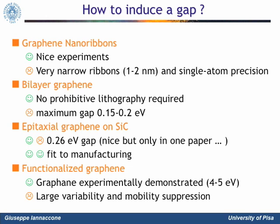Several options have been proposed to induce a gap in graphene. First is lateral confinement, which means defining graphene nanoribbons — very nice experiments are available, but we shall see that very narrow ribbons and single-atom precision is required. Then, bilayer graphene is a 2D material and therefore has the big advantage of not requiring prohibitive lithography, but can provide a relatively small gap. Epitaxial graphene on SiC is especially promising for wafer-level fabrication and has been shown to provide a slightly larger gap. Finally, graphene functionalization is gaining attention, but the challenges lie in the associated intrinsic variability and the poor mobility that one can expect.